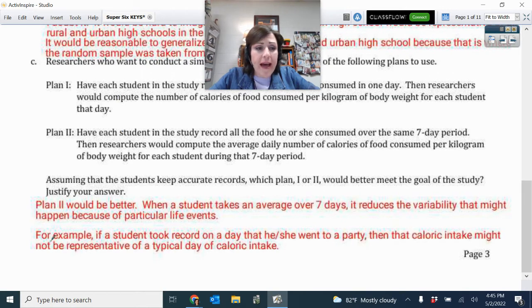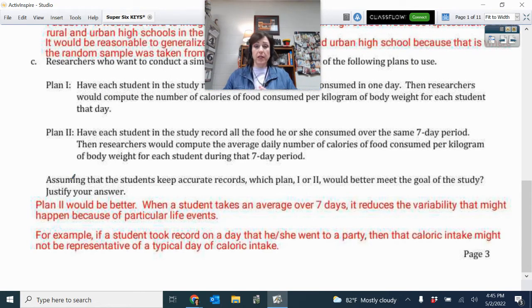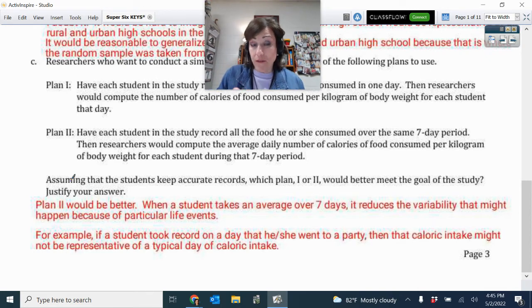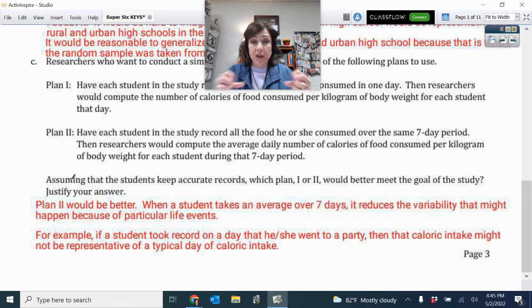Here we have the two different plans. One being the average of seven days versus just one day's worth of calorie counts. So when you do the scoring on this one, make sure that you pick one, first of all, pick an answer and then explain why that one is the better of the two support with reasonable statistical knowledge of why that would be. And so in this case, plan two would be better because the average over seven days will reduce the variability from sample to sample.